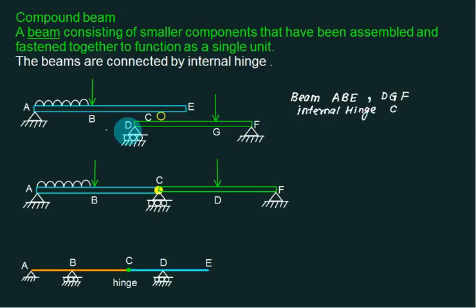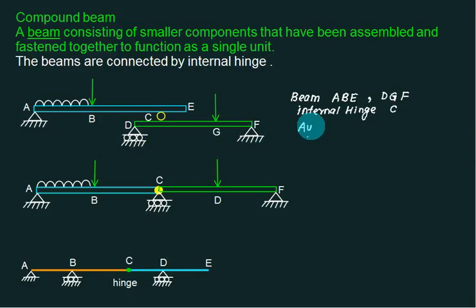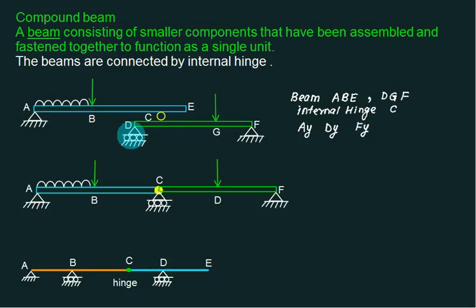How many reactions do we have? We have one reaction at A, one reaction at D, and one reaction at F. So we have three unknowns: AY, DY, and FY.